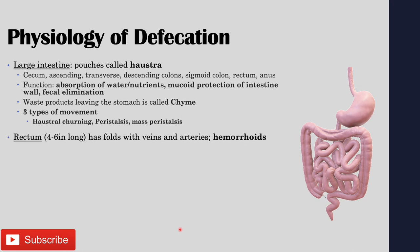The rectum comes right after the sigmoid colon. It's about four to six inches long and has folds within it; each fold has one vein and one artery. Whenever a vein of the rectum gets distended — either from straining at a bowel movement or repeated pressure — this creates a hemorrhoid. A hemorrhoid is a distended vein within the rectum, and they can be painful, burst, and bleed, creating frank blood in the feces. Frank just means bright red blood.